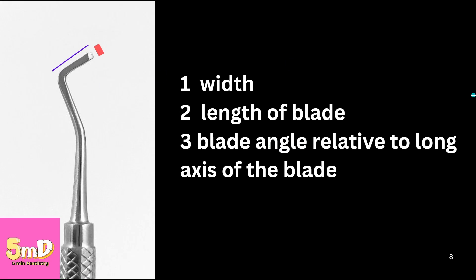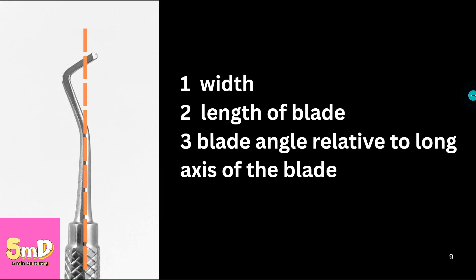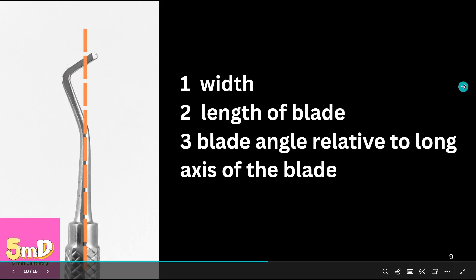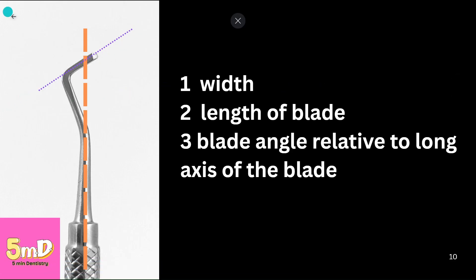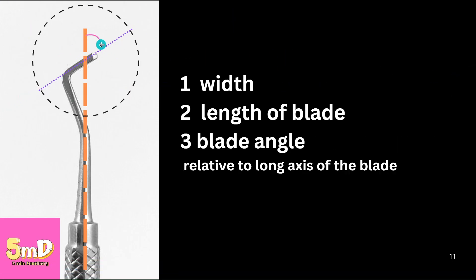The third number is the blade angle relative to the long axis of the instrument. This is the long axis of the instrument, and this is the long axis of the blade. The angle relative to both — this angle — will be the blade angle.